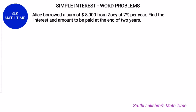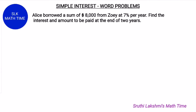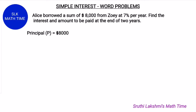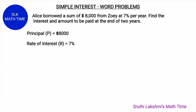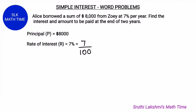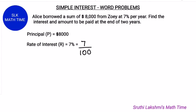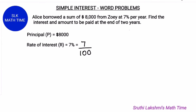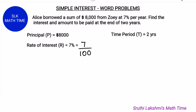So let's list the given data. Alice borrowed $8000, so the principal is $8000. The rate of interest is 7%, so to remove the percentage sign we write it as 7 by 100. The time period is two years. We have to find the interest and the amount.